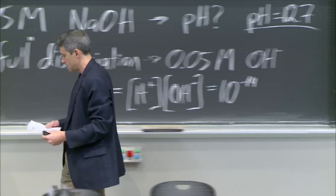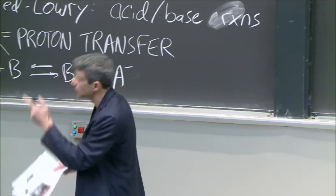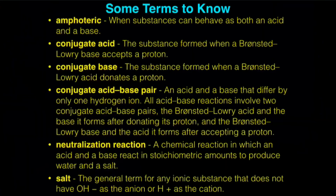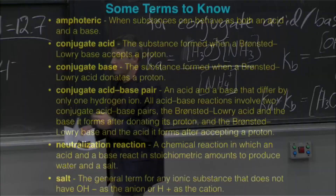Here's a little recap of what we've done so far: we've talked about amphoteric species, conjugate acids and bases in the Brønsted-Lowry form — they accept or give a proton — conjugate acid-base pairs, neutralization reactions, and salts. These are concepts I'd like you to know.